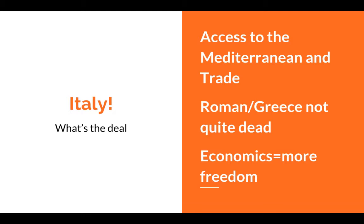Italy is the place where this is all going to start. A lot about the Renaissance is that all of that great knowledge from Rome and Greece that had been lost is going to get pulled back in and expanded upon. Italy was in a really good position because of its access to the Mediterranean and trade. The Mediterranean Sea was one of the hotbeds of trade in the entire world, dominated primarily by the Muslims at this time and a little bit by the Byzantines. What Italy was able to do was come into contact with societies that were more advanced, and they were also able to make money.